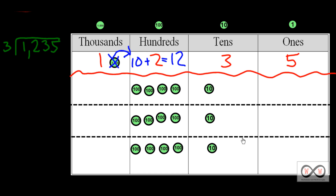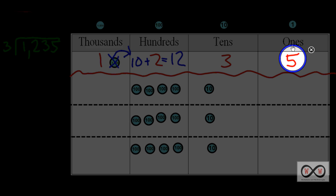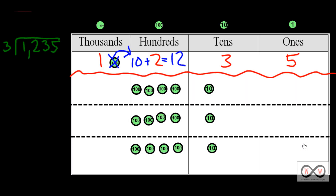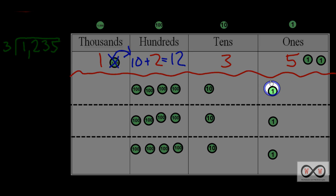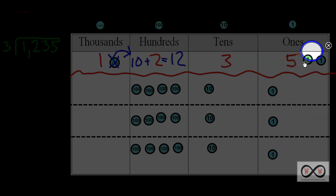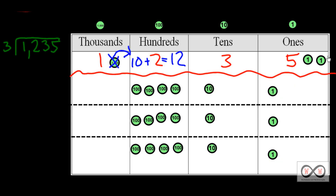Now let's move on to the ones place. We have five ones and we need to divide that into three equal groups. If we take five ones and share them equally into three groups — one, two, three — what do we do with the leftovers? There's four, there's five. You can think of it like friends: if you have five candy bars and only three friends, you wouldn't want to give two friends two candy bars and one friend only one. So what you have here is really some leftovers. In math we call leftovers a remainder. So we have a remainder of two.